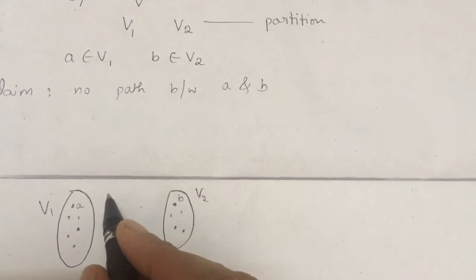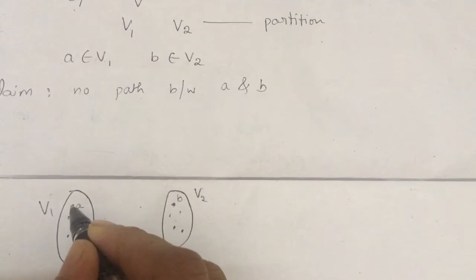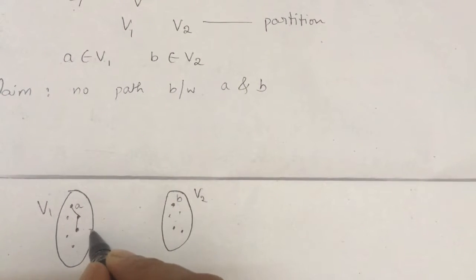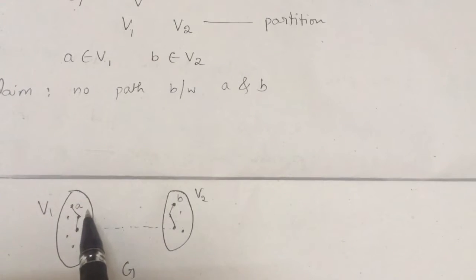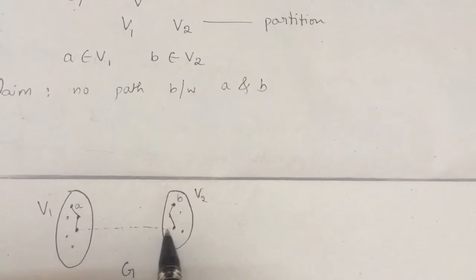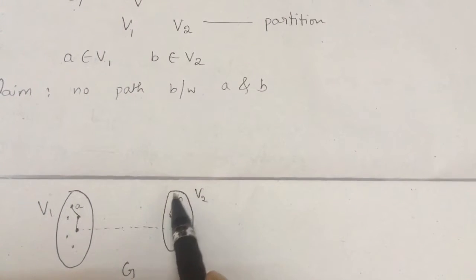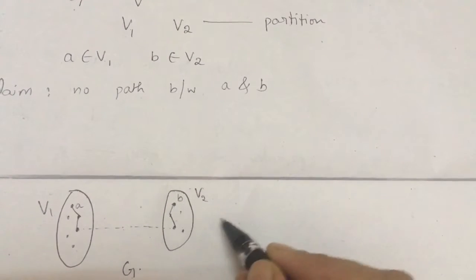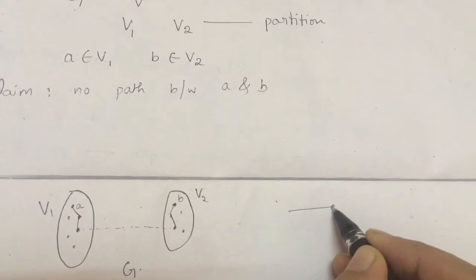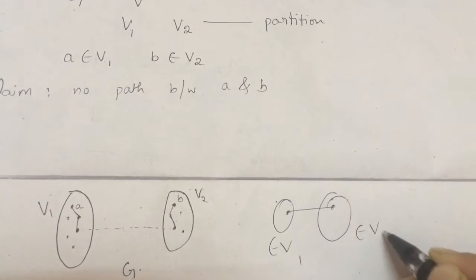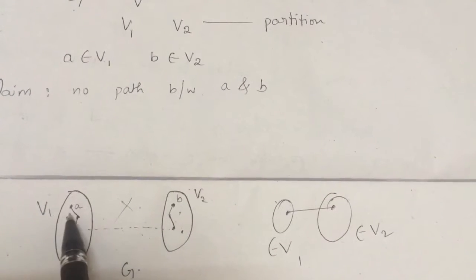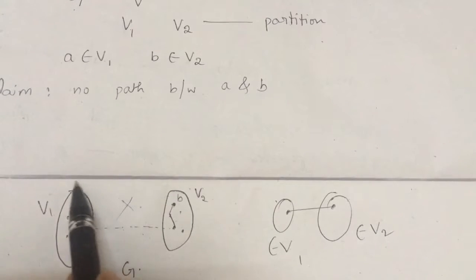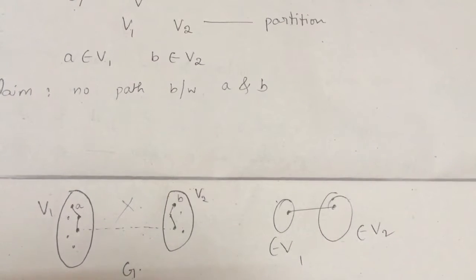If we suppose there is a path from A to B, that path would have to contain an edge connecting a vertex from V1 to a vertex from V2. But that is against our assumption that there is no edge in G whose one end vertex belongs to V1 and another belongs to V2. Therefore there is no path between A and B, meaning there is no path between any vertex in V1 and any vertex in V2, so graph G must be disconnected.